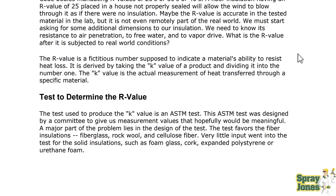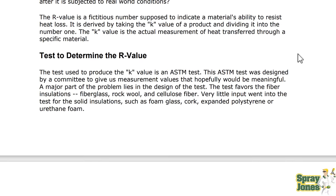R-value, or resistance value, is used to determine K-value. The K-value is an ASTM test for thermal conductivity. A major part of the problem lies in the design of the test — the test favors fibrous insulation, meaning fiberglass, rockwool, and cellulose fiber. Very little input went into the test for solid insulation such as foam, glass, cork, and expanded polystyrene.